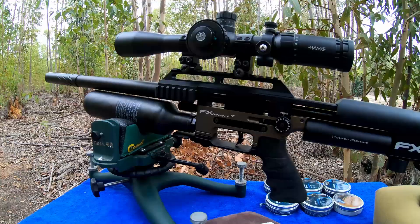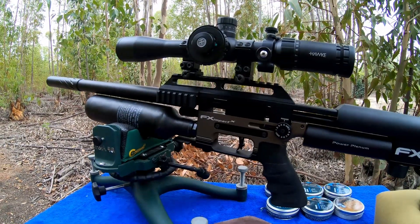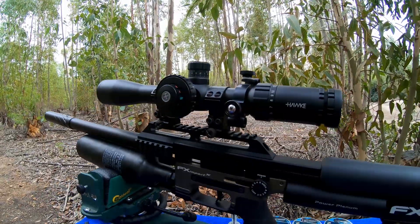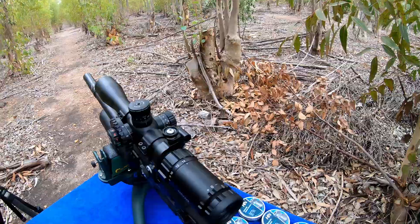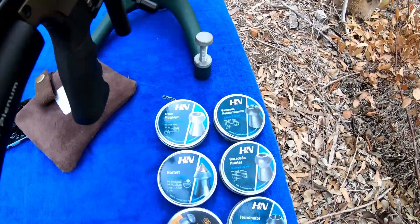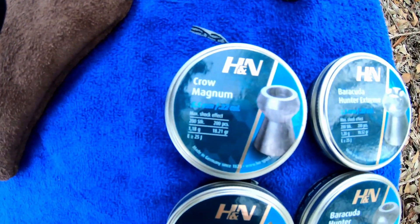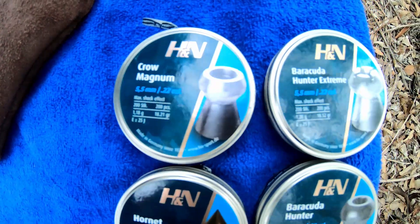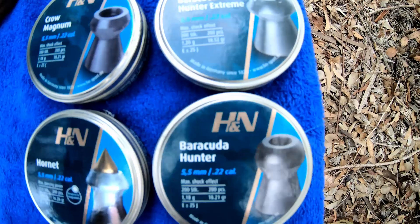On top I've got a Walke little scope there for those guys that did wonder. Alright, so the pellets today in contention is the H&N Crow. Now these guys are actually built just for 30 meters, but I'm going to push them for 60 today. We've got the Hunter Extremes, you've got the Hunters there, the Hornets.